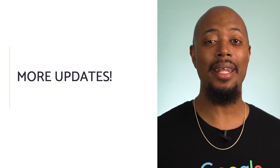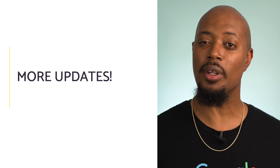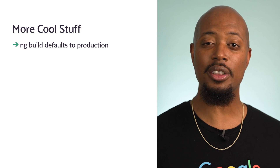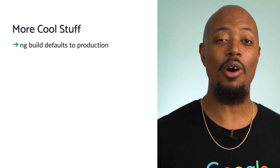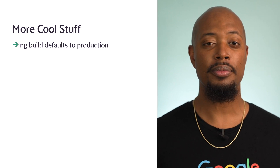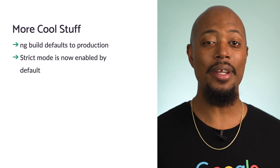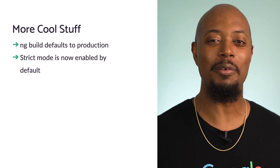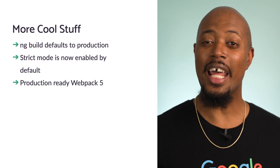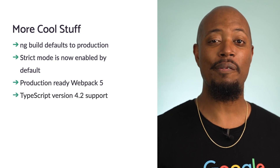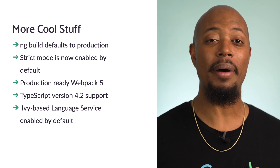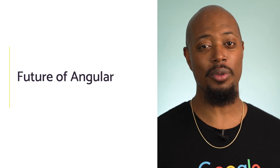We have a few more updates in this release that we think teams will love and get a lot of value from. ng-build now defaults to production, so no more --prod flag — and it's worth noting there's no change to ng-serve. Strict mode is now enabled by default for new projects, so you can catch those pesky code bugs earlier in your development cycle. Webpack 5 is now production ready, TypeScript version 4.2 is supported, and the Ivy-based language service is on by default. Lots of goodies are packed into this release.